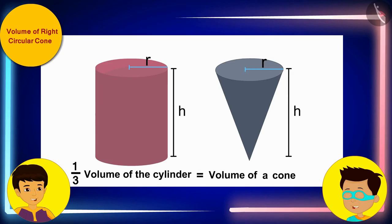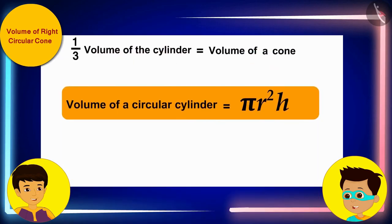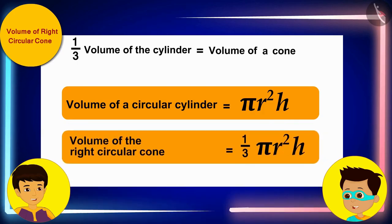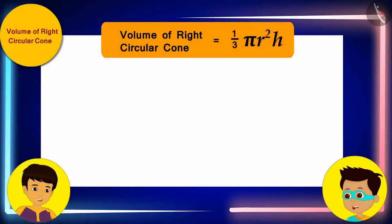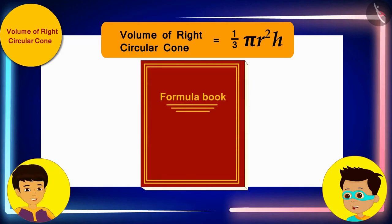And you know that the volume of a circular cylinder is equal to pi r squared times h, where r is the radius of its base and h is the height. Therefore, we can write the volume of the right circular cone as one-third of the volume of the cylinder, where r is the radius of the base of the cone and h is its height. Manas, let me quickly write the formula for the volume of a right circular cone in the formula book.